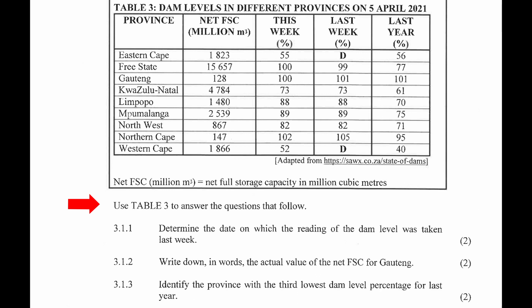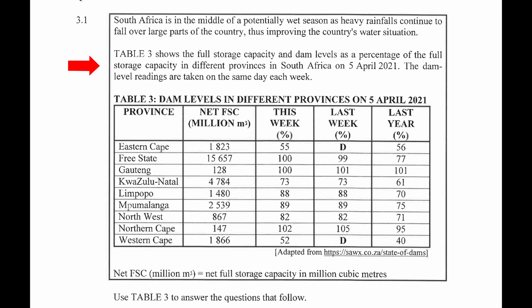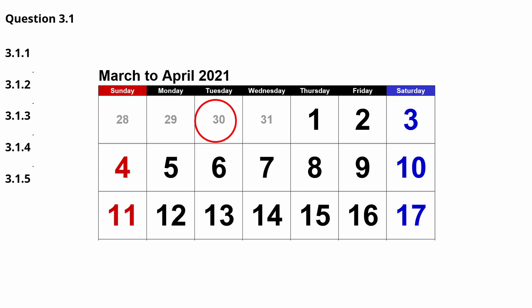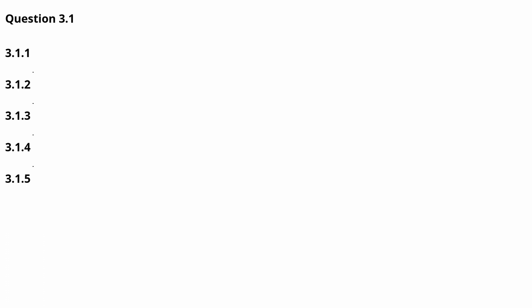Question 3.1.1: Determine the date on which the reading of the dam level was taken last week. From the description we see that this week's readings were taken on the 5th of April 2021, and the dam level readings are taken on the same day each week. So last week's readings were taken seven days prior — four days ago was the 1st of April, five days ago was the 31st of March, and seven days ago was the 29th of March. So last week's readings were taken on the 29th of March 2021.